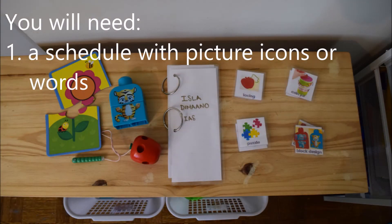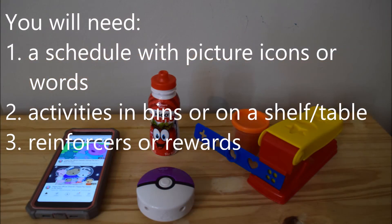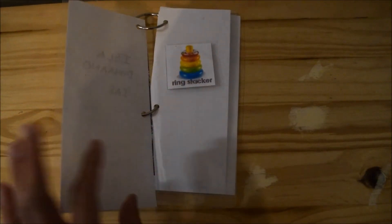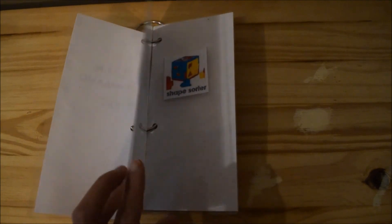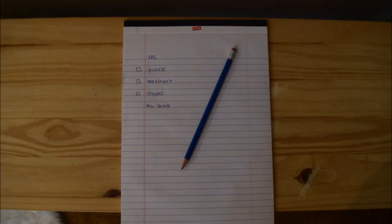To set up an IES, you will need picture icons or words that represent tasks, mastered activities that the child can complete independently, reinforcers or rewards, and a way to present the schedule. A schedule can take many forms. It can be a book or binder, a strip of activities, a written checklist of tasks, or a bin system.